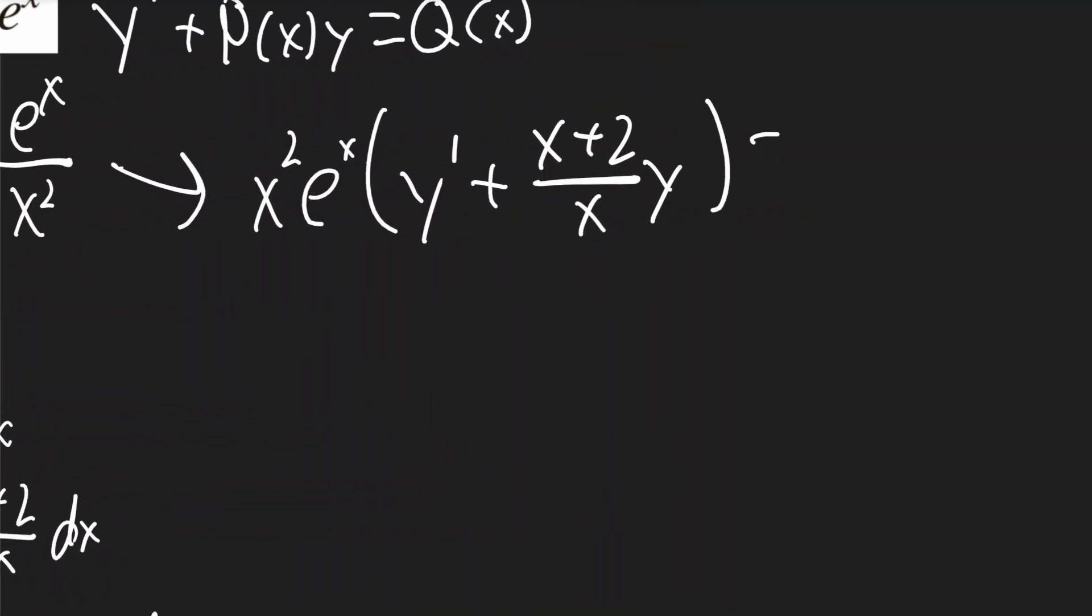And we'll do the same to the other side. It'll be x squared times e to the x times e to the x over x squared. These x squareds will cancel out. And the e's will add up together. We'll have e to the 2x.